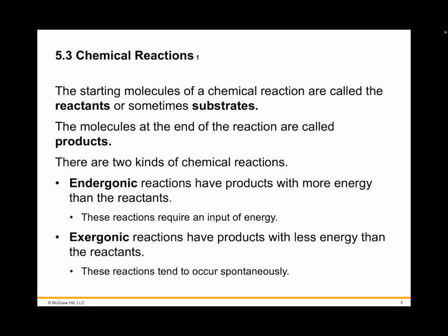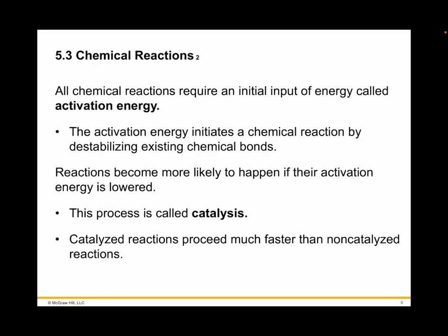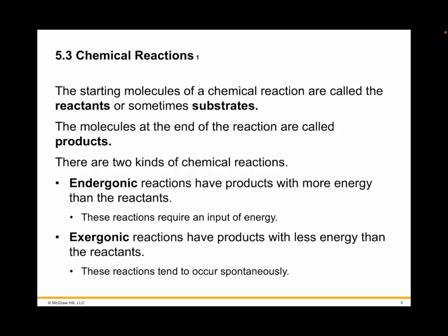Consider how a chemical reaction proceeds — see figure 5.4 on page 94. Like rolling a boulder uphill, energy needs to be supplied when the product of the reaction contains more energy than the reactant. This chemical reaction is called endergonic — it doesn't happen spontaneously. By contrast, an exergonic reaction tends to occur spontaneously because the product has less energy than the reactant, like a boulder rolling downhill.